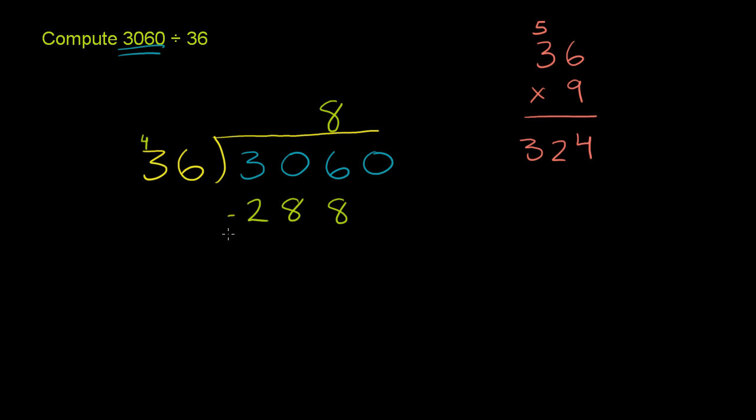So now we can just subtract. So we have 6 minus 8. We can't just subtract 8 from 6. We have to do a little bit of regrouping. Let's get a 10 from the ones place right here. But we can't borrow anything from here or regroup anything from there. So let's go to the hundreds place. Let's take 1 from the hundreds place. And so this will become a 2. And then this 0 here will become a 10.